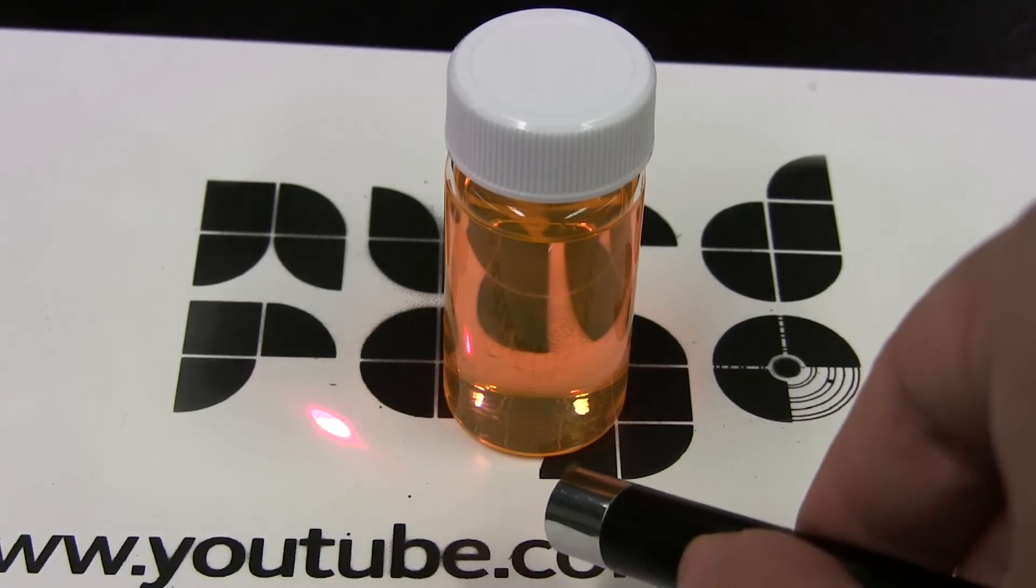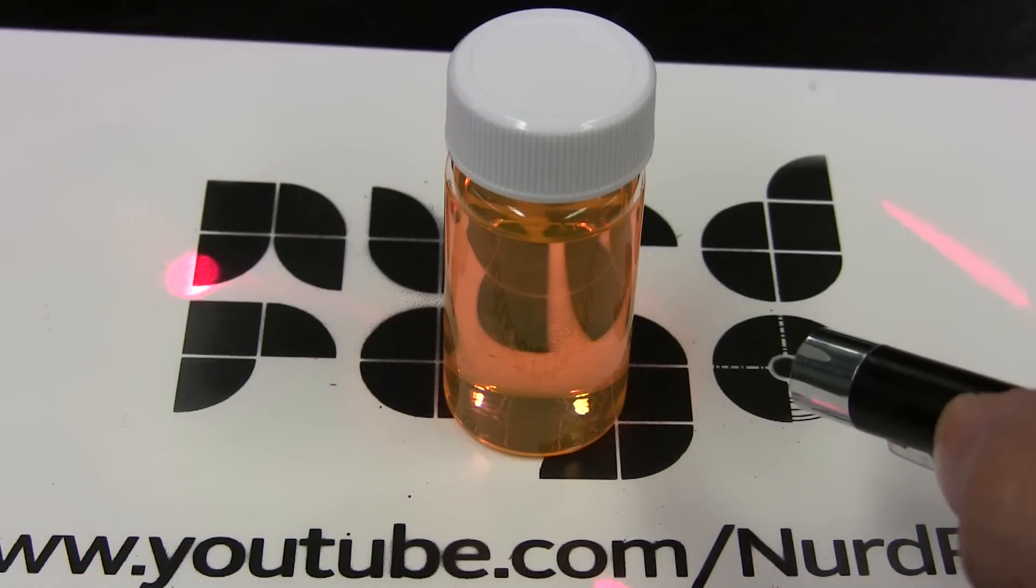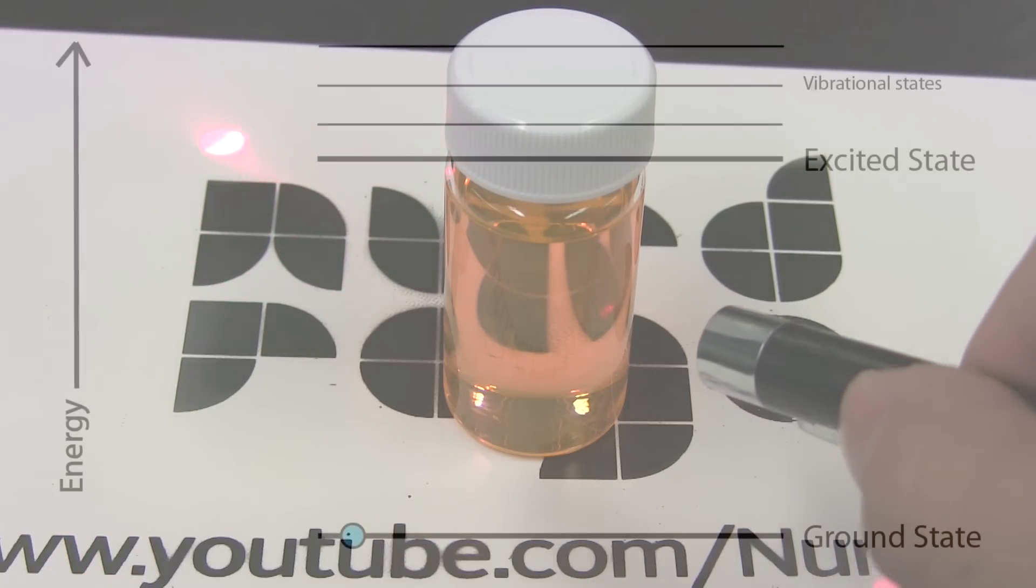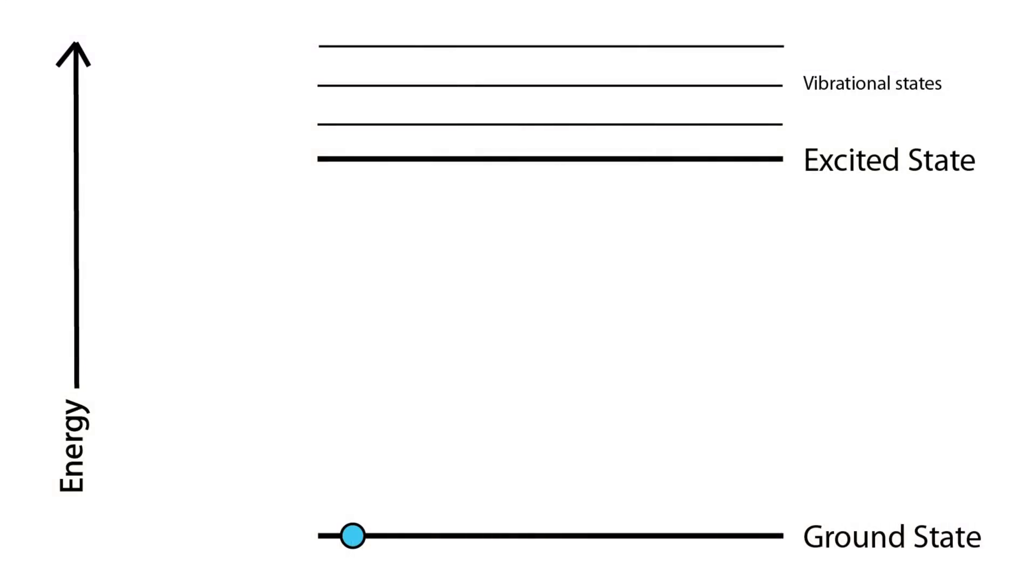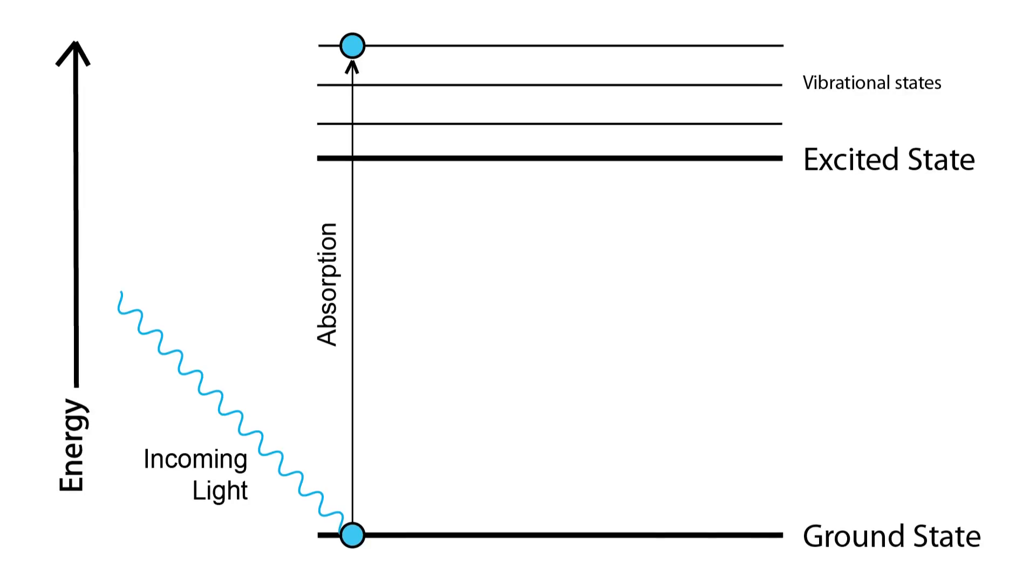Now I'm going to shine a red laser and we get no yellow fluorescence from it. Why is that? Let me show you with this Jablonski diagram. What's happening in fluorescence is that the incoming light raises the energy of the electrons in the molecules to an excited state.